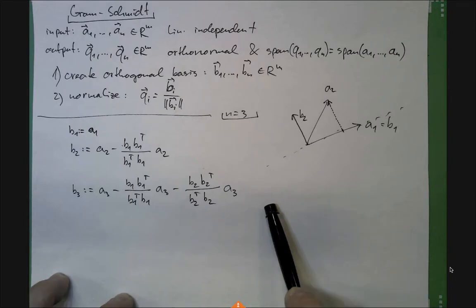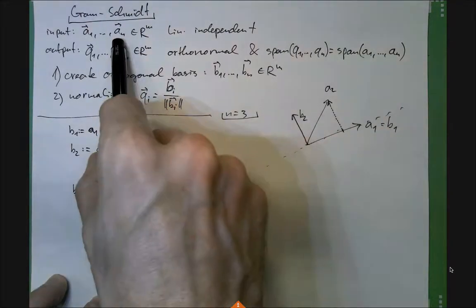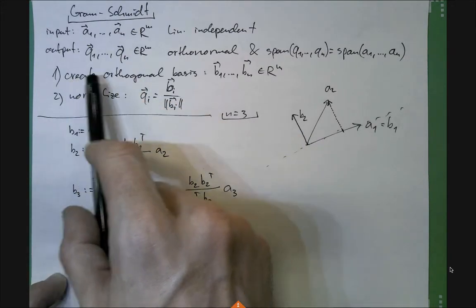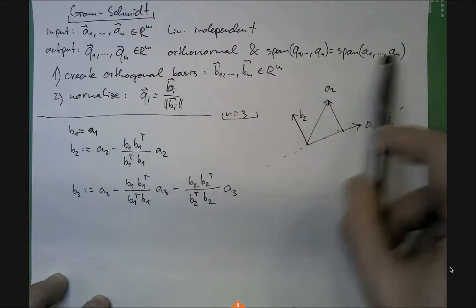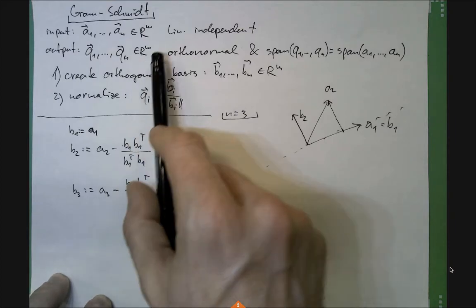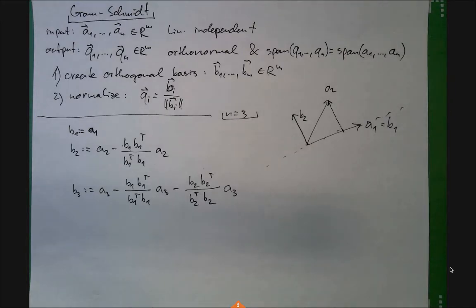Why is Gram-Schmidt important? It converts a general linearly independent basis into an orthonormal basis. A basis is a set of linearly independent vectors that generate some subspace. The importance of Gram-Schmidt is that orthonormal bases make our life much easier — they have the nice property that Q transpose Q equals identity, the same property we were using in transform coding.